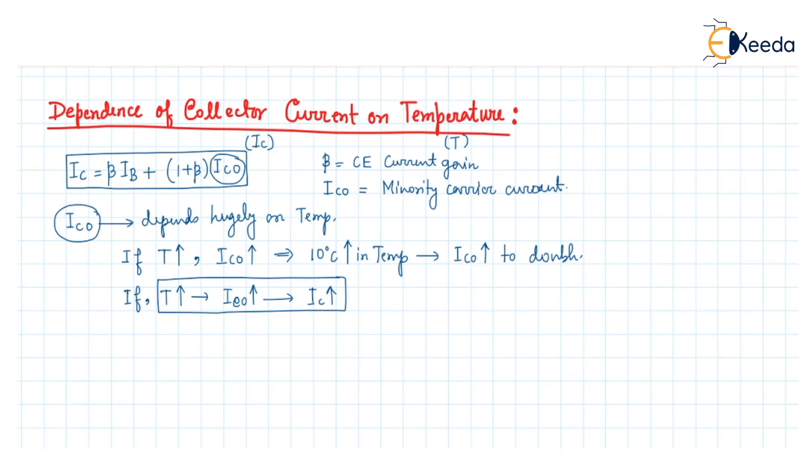We have to stabilize this IC current with respect to temperature, and that is done using stability analysis. Proper biasing can stabilize IC with respect to temperature. Thank you.